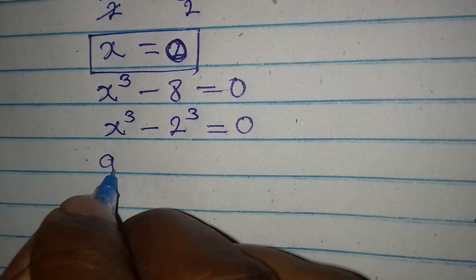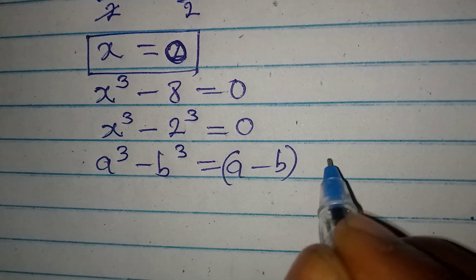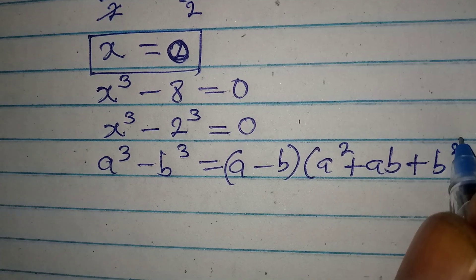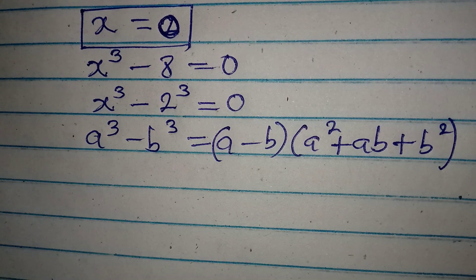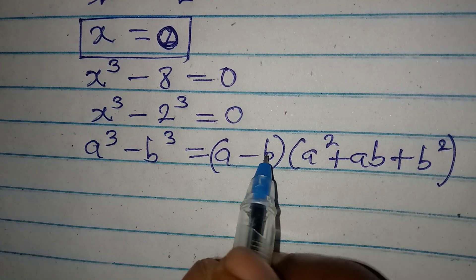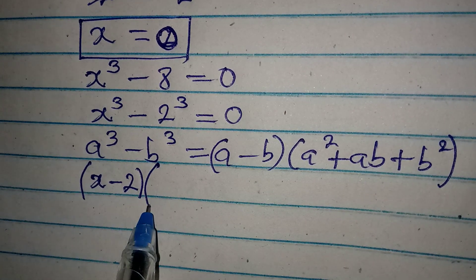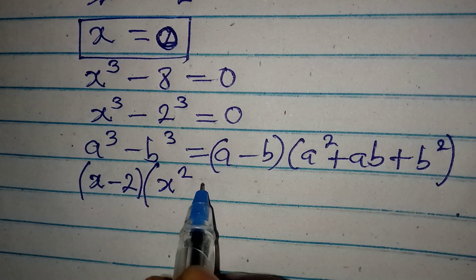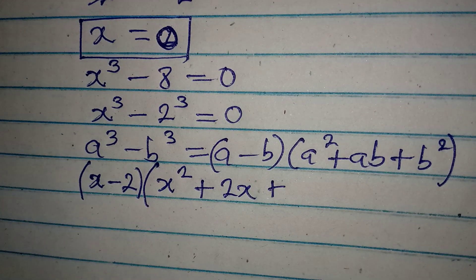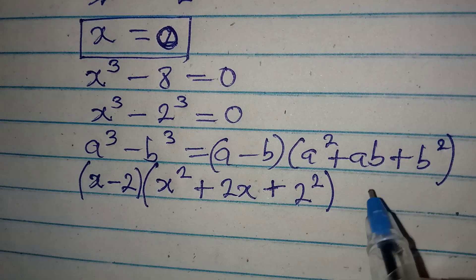Now let's apply the standard identity: a³ minus b³ equals (a minus b) times (a² plus ab plus b²). So a minus b becomes (x minus 2), and the second bracket is a² which is x², plus ab which is 2x, plus b² which is 2² equals 4. All of this equals 0.